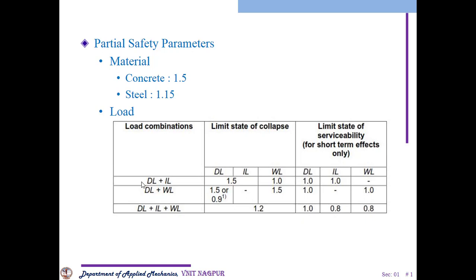Load combinations are very important because you cannot analyze your structure with only one single combination or single dead load or single live load. You need to provide combinations — then and only then your overall analysis will capture the overall building load. Building load consists of dead load plus live load, floor finish, roof load — all this comes under dead load. Live load means the load which is movable.